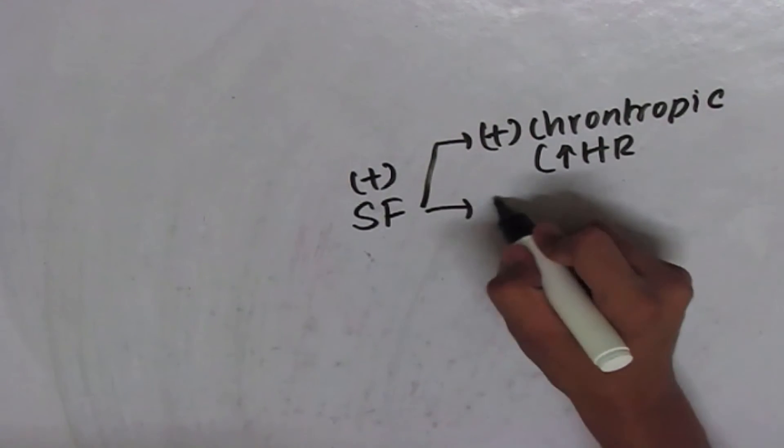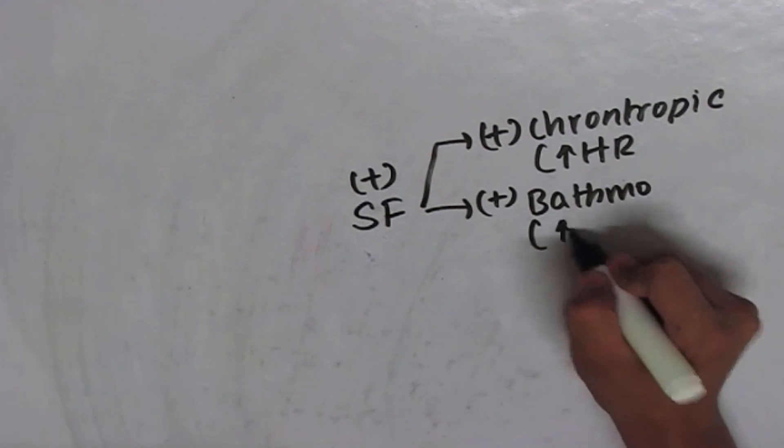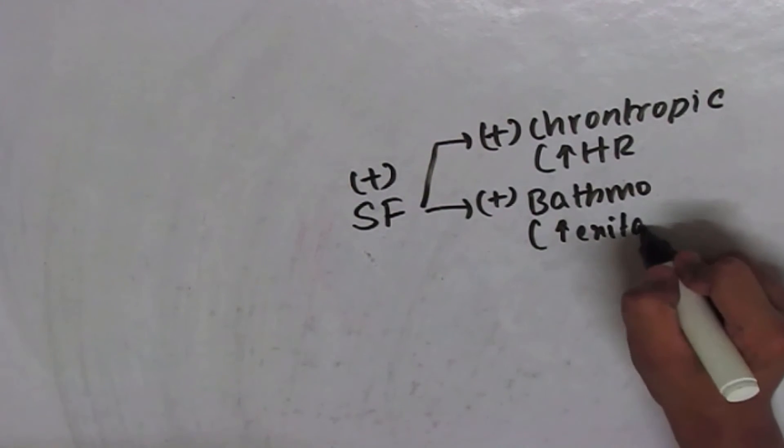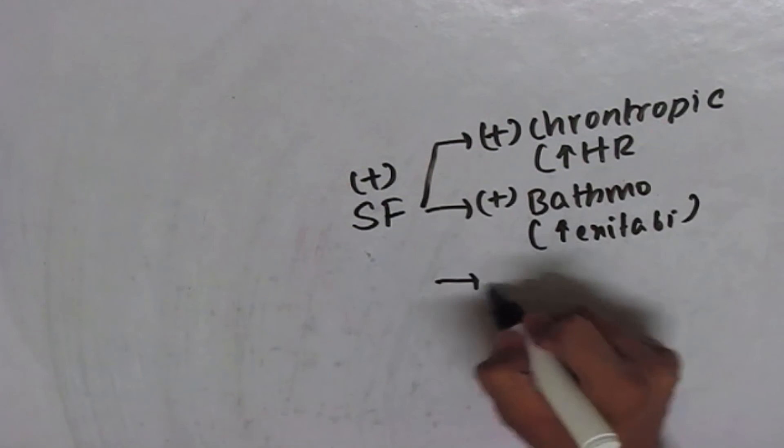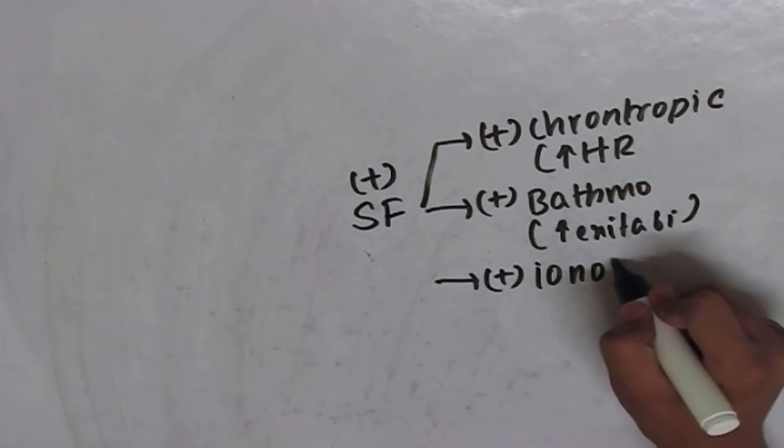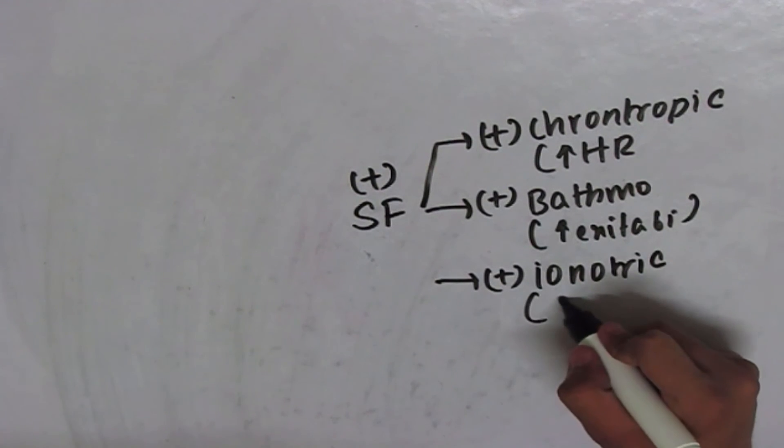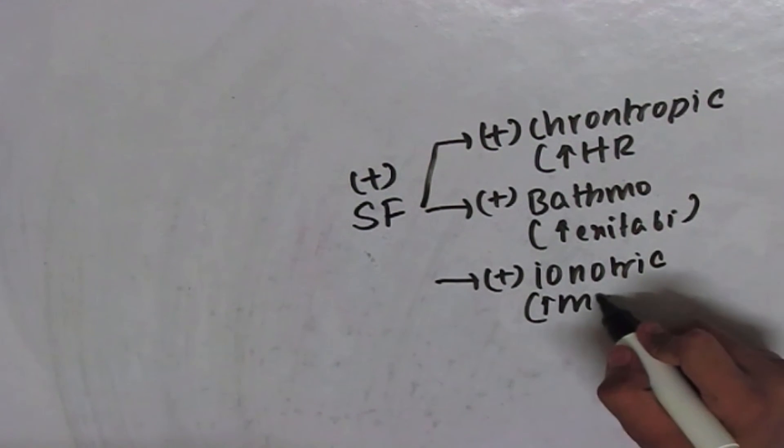Positive bathmotropic, that is increased excitability, and positive inotropic, that is muscular contractility which is increased.